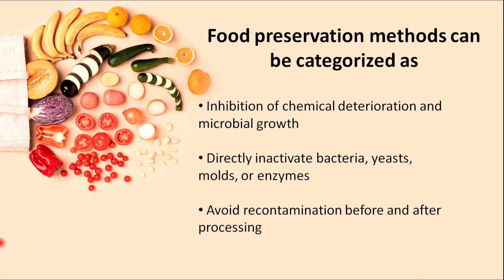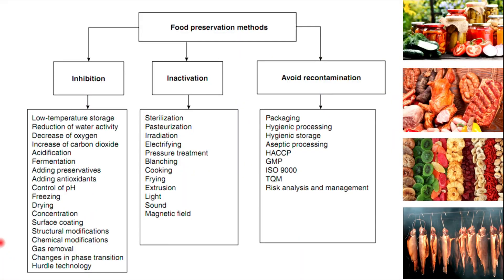Basically, food preservation methods can be categorized as: inhibition of chemical deterioration and microbial growth; directly inactivate bacteria, yeast, and molds or enzymes; and avoid recontamination before and after processing. Here you can see a number of techniques or methods from the above categories that we can use for food preservation.